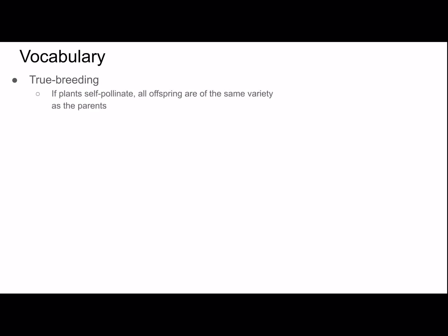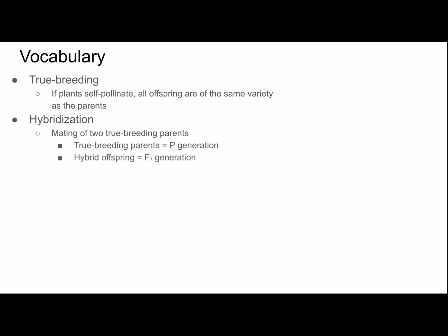If plants self-pollinate, all offspring are of the same variety as the parents, and those plants are called true-bred. Hybridization is the mating of two true-breeding parents. The true-breeding parents are called the P generation. The hybrid offspring are called the F1 generation. The F1 generation will self-pollinate and produce the F2 generation. F stands for filial — basically the children of the P generation.